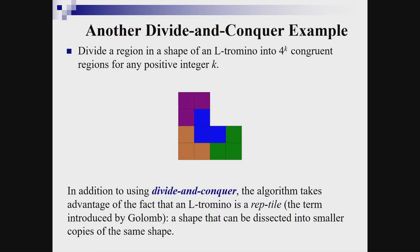Another good example of applying divide and conquer is to divide a region in the shape of an L-tromino into 4^k congruent regions. In addition to using divide and conquer, the algorithm takes advantage of the fact that an L-tromino is a reptile — the term introduced by Golomb for shapes that can be dissected into smaller copies of themselves.